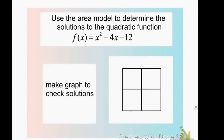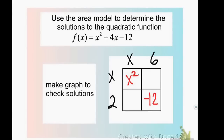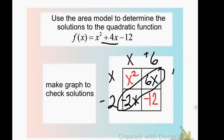Next example: x squared plus 4x minus 12. I put x squared in the first box and negative 12 in the last box. x times x gives x squared, and 6 times 2 gives 12. To get negative 12, one of them must be negative. Since I want positive 4x as the middle term, the 6 is positive and the 2 is negative. That gives 6x and negative 2x, which combine to give positive 4x.